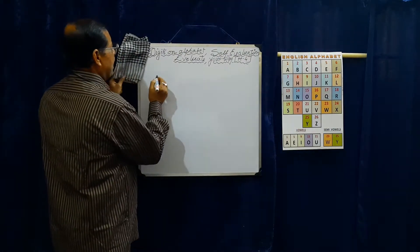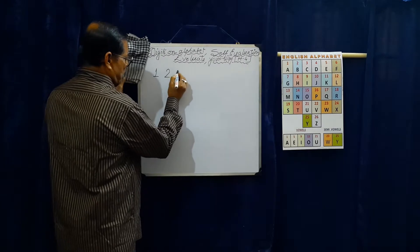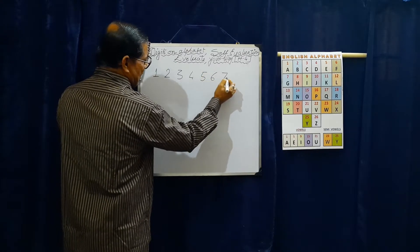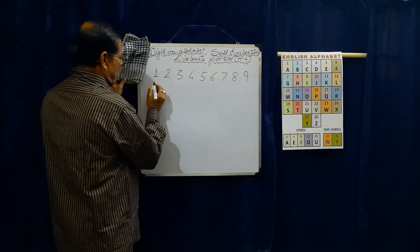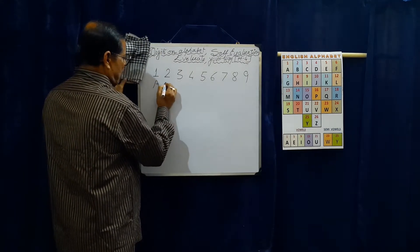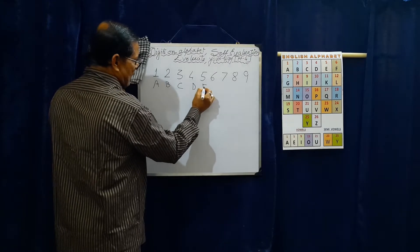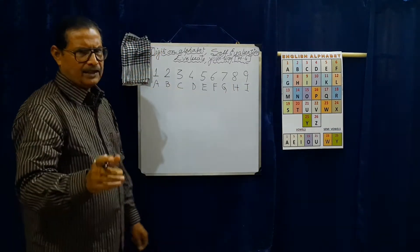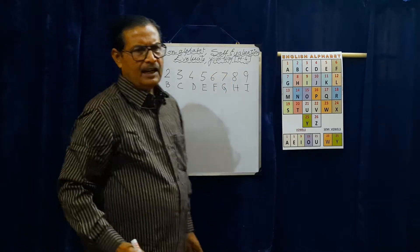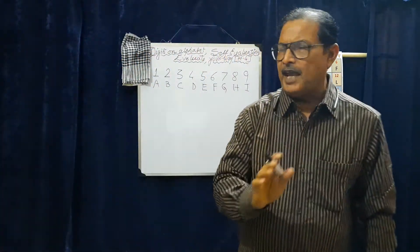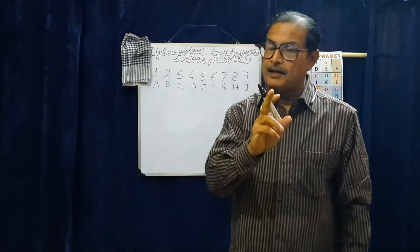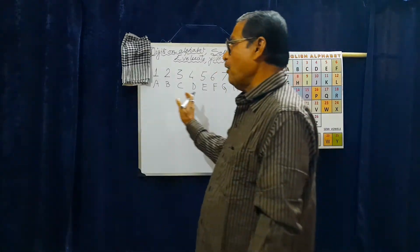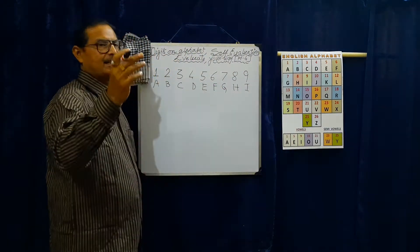We'll take the natural numbers: one, two, three, four, five, six, seven, eight, nine. These correspond to the letters A, B, C, D, E, F, G, H, I. So we have these nine letters. Now, how many words can you make with these nine letters? Remember, the word has to be the name of some thing, not just any word.